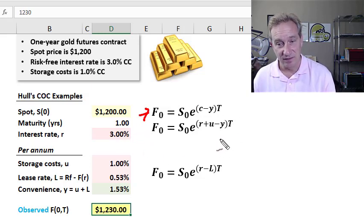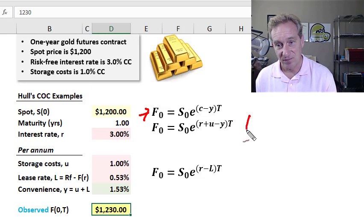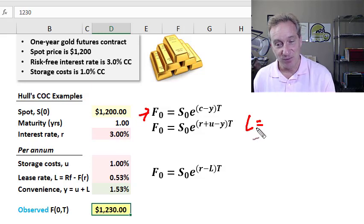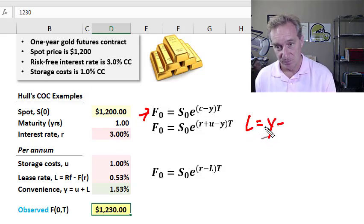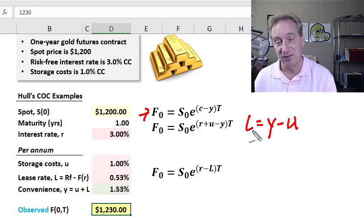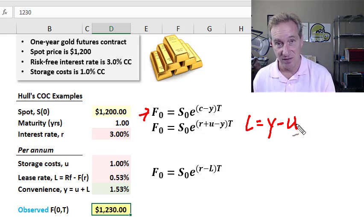Now, where is the lease rate? Well, what reconciles this is, and this took me a little while to figure out actually, but what reconciles this is that the lease rate is equal to the convenience yield minus the storage cost. So the way that I think about this is that the lease rate is the net convenience yield, convenience minus storage cost. Why is that?